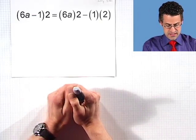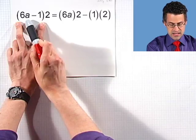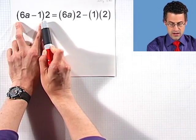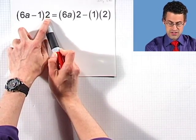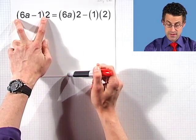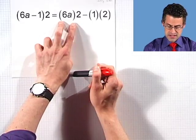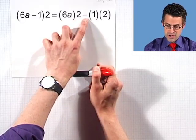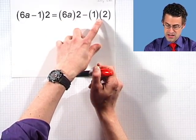Well, how do you parse this? This is saying the quantity 6 times a minus 1, all multiplied by 2. Remember, if there's no symbol between two objects, that means we're multiplying. And that equals 6 times a times 2 minus 1 times 2.